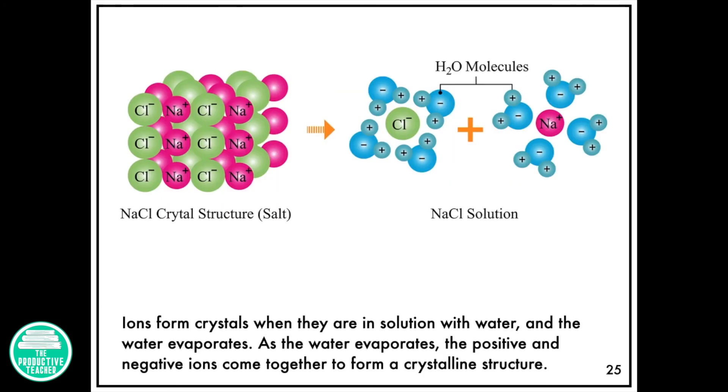Ions form crystals when they are in solution with water and the water evaporates. As the water evaporates, the positive and negative ions come together to form a crystalline structure.